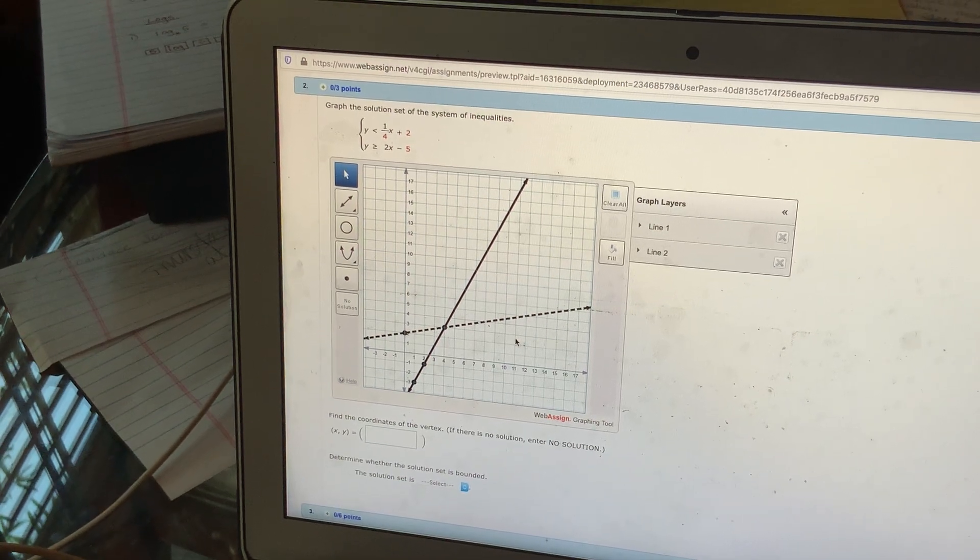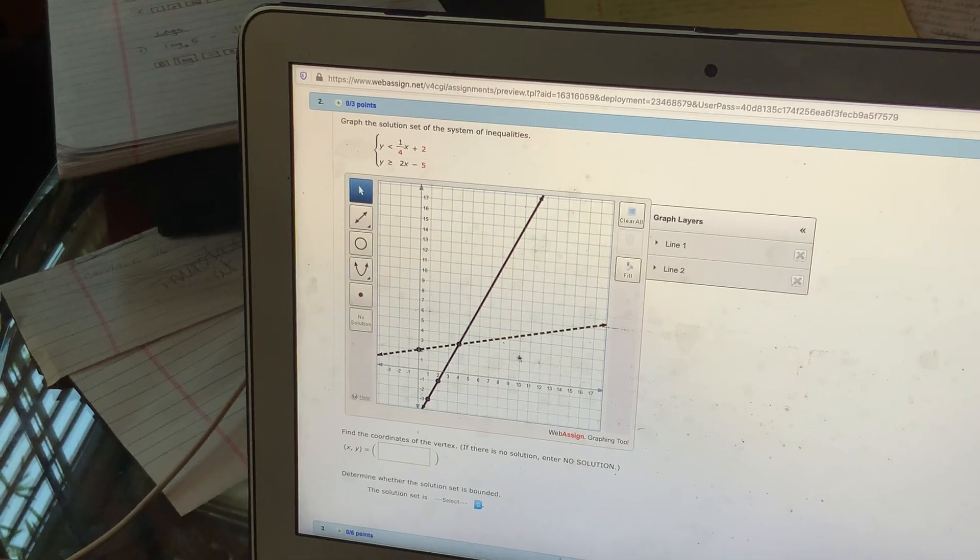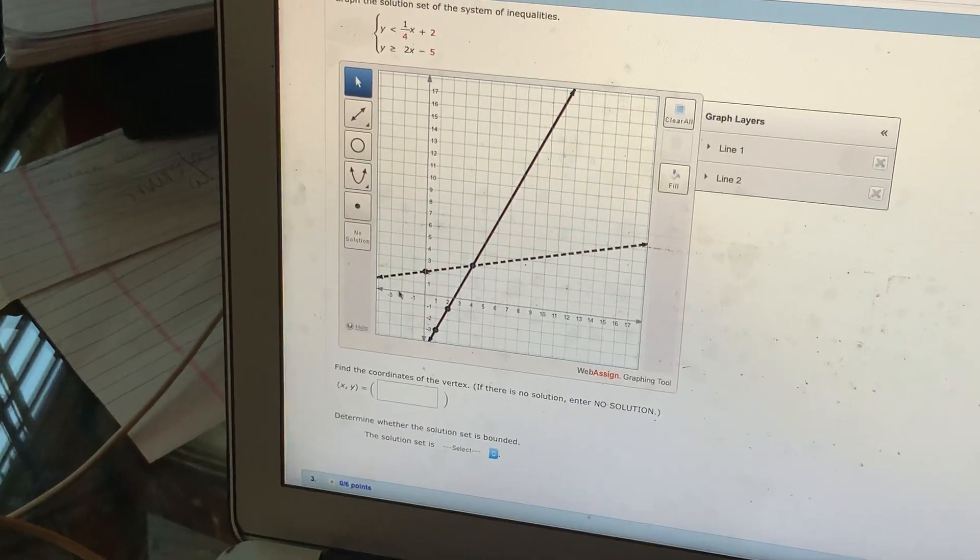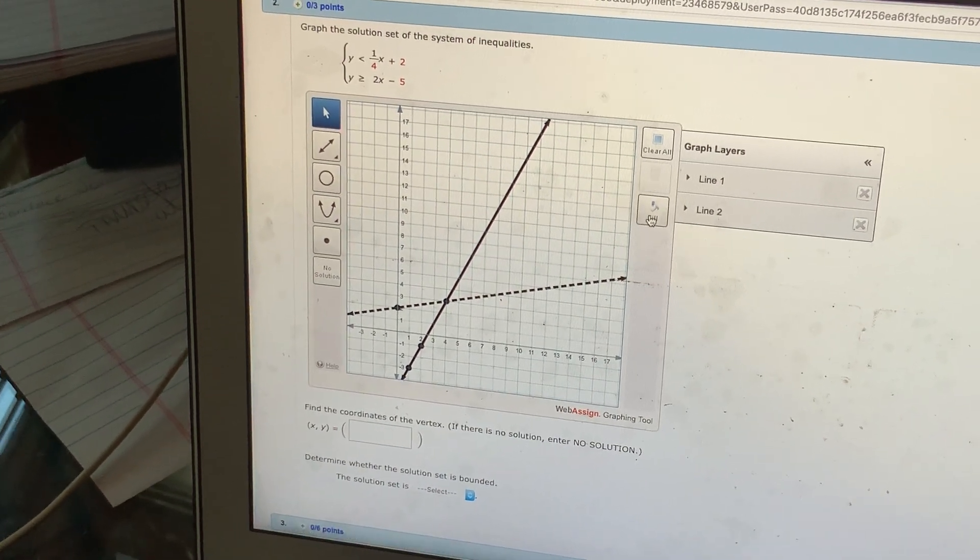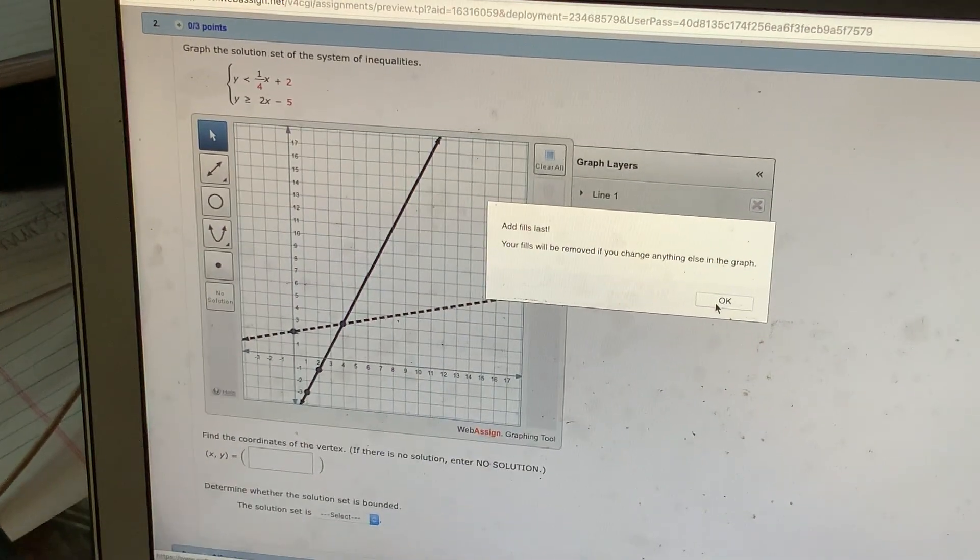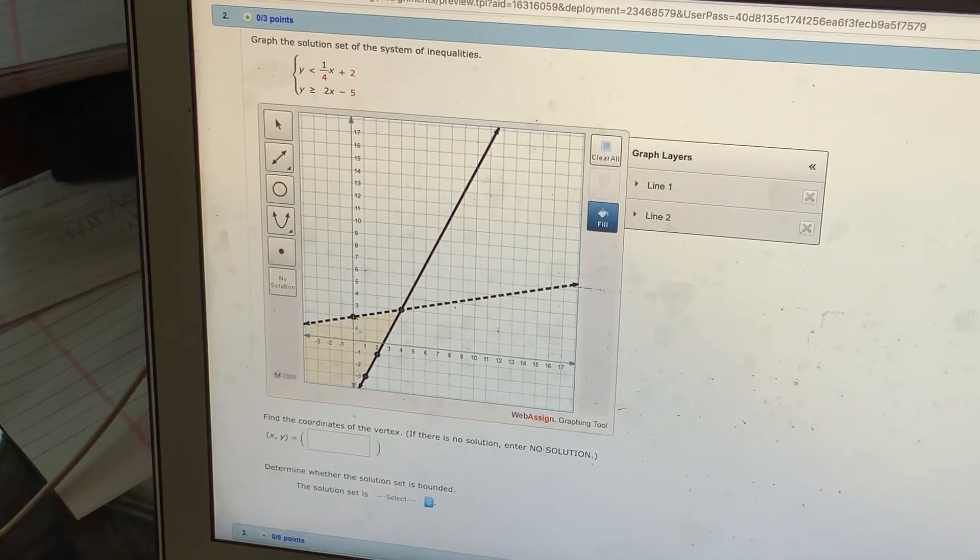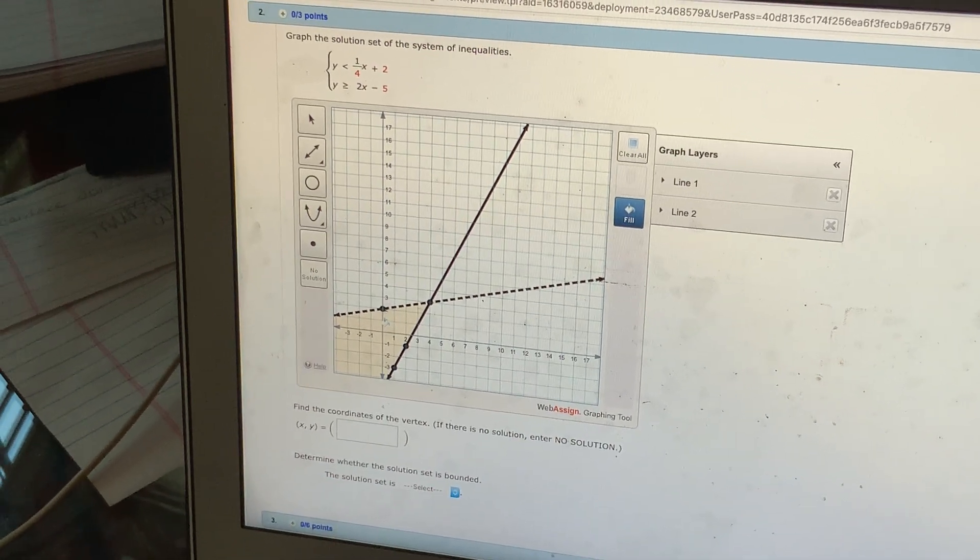Now, once you've already done your solution, just go ahead and fill in. And you know that the solution set is this area right here that you have to fill in. So you can just click on fill. And it'll tell you that once you fill in, you can't make any changes. So I'm going to fill in that area right there. And that is where I'm done.